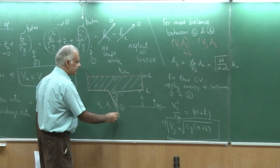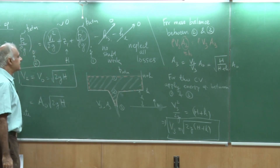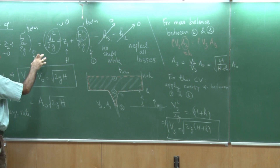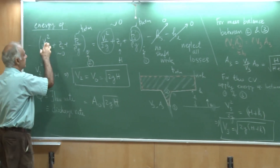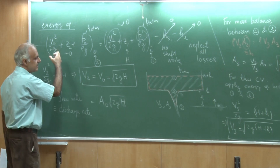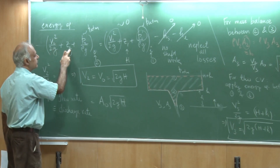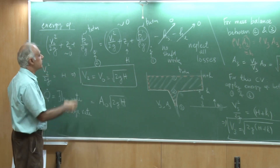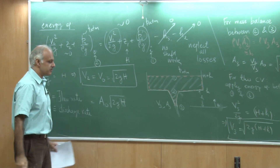The pressure everywhere is of course atmospheric. It is a very fine balance. To preserve the total head, the velocity of the jet increases while z actually reduces, and the pressure term does not contribute because pressure is atmospheric everywhere. So it is just an interplay between these two terms — kinetic head and elevation head.